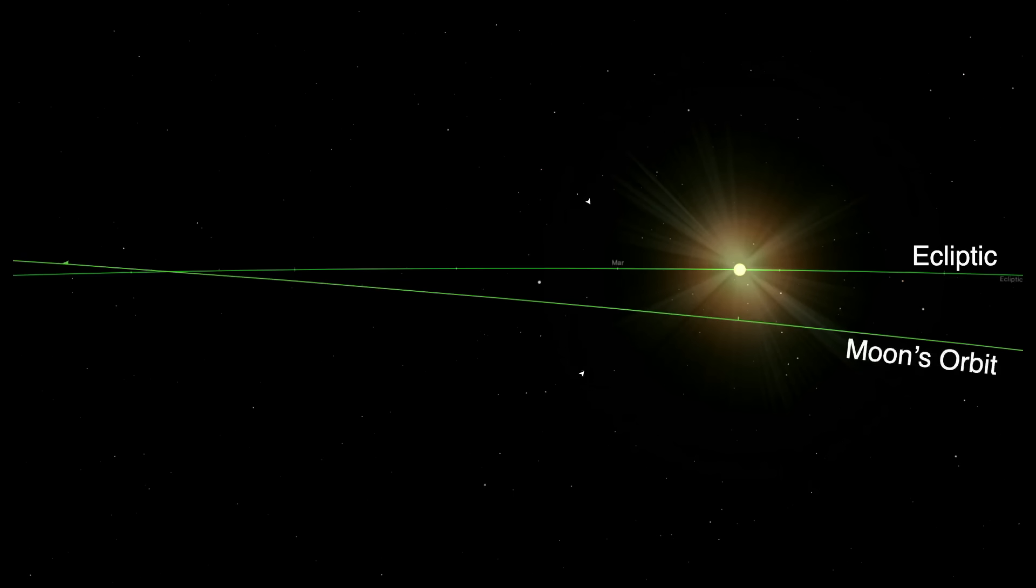The moon's orbit is tilted five degrees to the ecliptic. The sun and moon are only one half of a degree in diameter, as seen from the earth. This means that most of the time, when the moon passes between us and the sun, it will pass above or below the sun's disk. Here, we see the motion of the sun and moon the month before our eclipse in April. See how it misses?